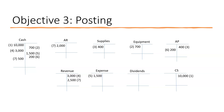Transaction eight: paid rent expense of $1,000 — debit expense, credit cash $1,000. In this example we've simplified by showing all expenses in one account, though in reality you would have separate accounts for salaries expense and rent expense. Transaction nine: received $600 from transaction seven — debited cash $600, credited accounts receivable $600. Transaction ten: paid dividends of $300 to stockholders — debited dividends $300, credited cash $300.